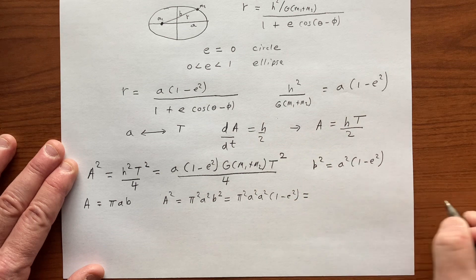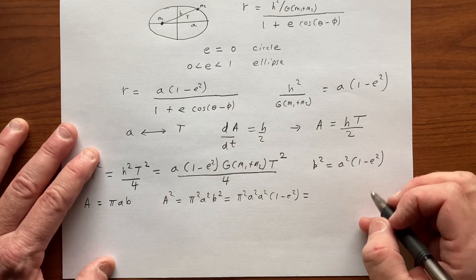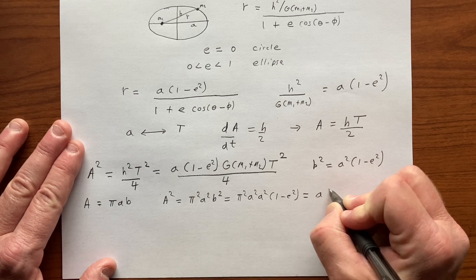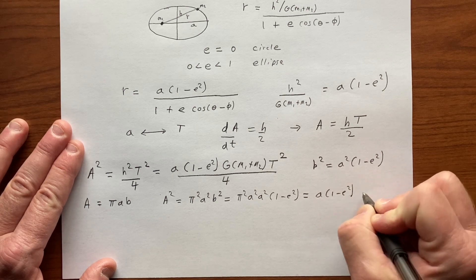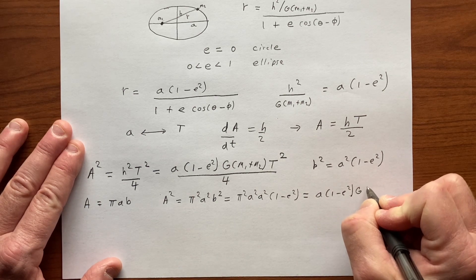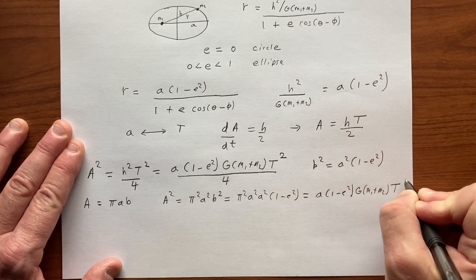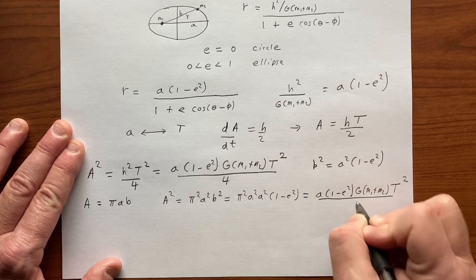And that has to be equal to this. So that is A, 1 minus E squared, G(M1 plus M2), the period squared over 4.